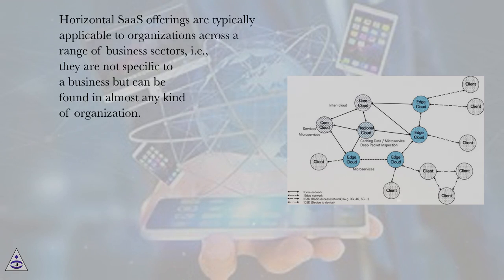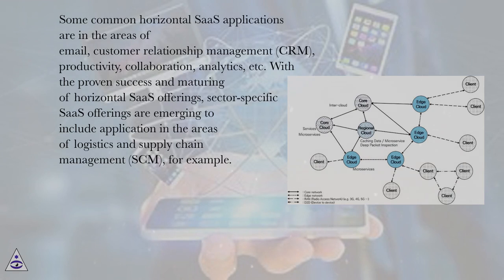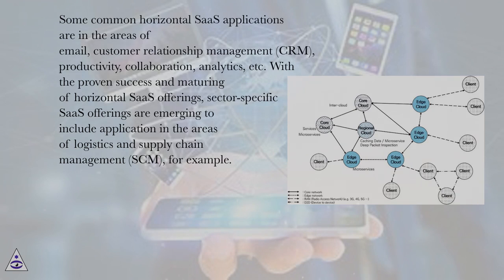Horizontal SaaS offerings are typically applicable to organizations across a range of business sectors, i.e., they are not specific to a business but can be found in almost any kind of organization. Some common horizontal SaaS applications are in the areas of email, customer relationship management (CRM), productivity, collaboration, analytics, etc. With the proven success and maturing of horizontal SaaS offerings, sector-specific SaaS offerings are emerging to include applications in the areas of logistics and supply chain management (SCM), for example.